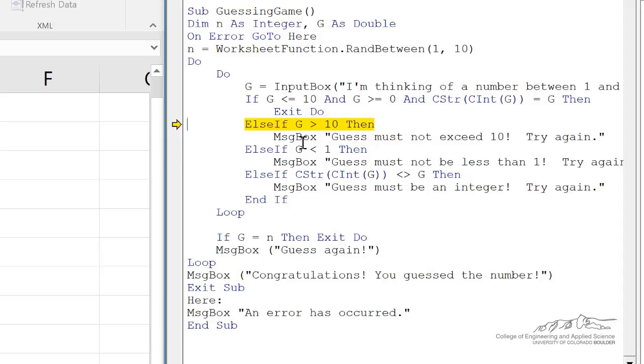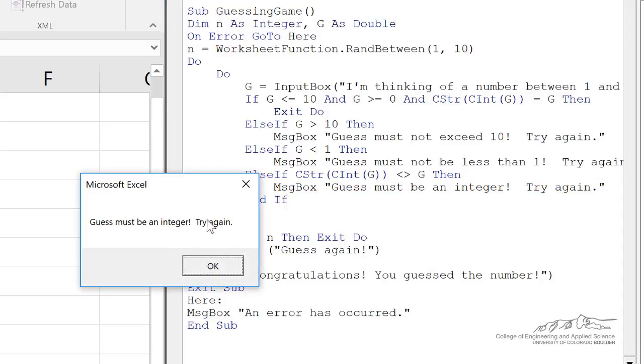So we bump down, and this is identified as being a non-integer. So then it outputs, guess must be an integer, please try again.